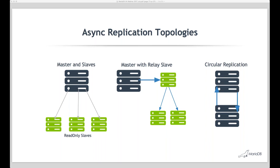To set up circular replication, all servers need their binary log enabled, and the log_slave_updates option must be turned on so that each server logs all events — not just local ones — into its own binary log. This is also required for relay slaves.